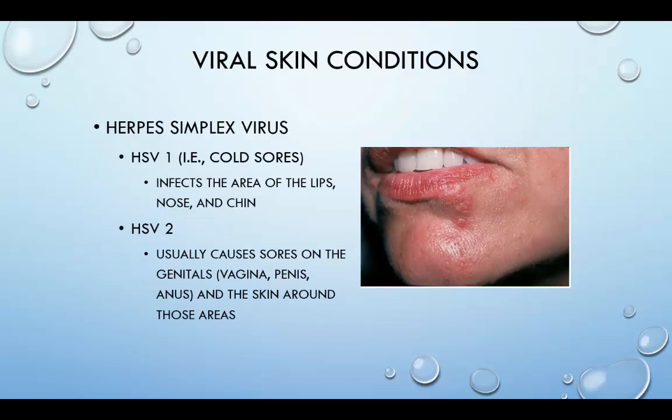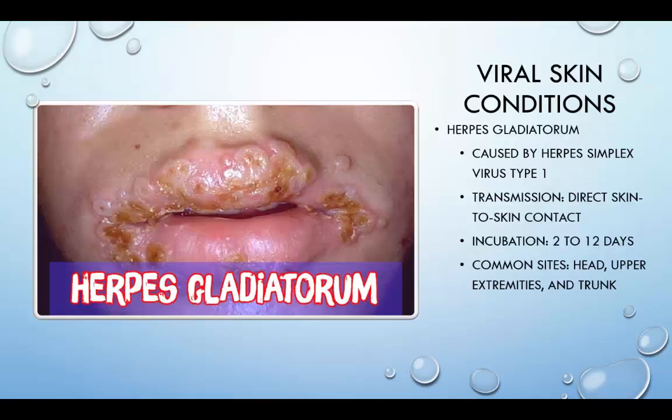Viral skin infections are typically extremely contagious. Herpes simplex virus has virus 1 and virus 2. HSV-1 is also known as cold sores and infects the areas of the lips, nose, and chin. HSV-2 usually causes sores on the genitals such as the vagina, penis, and anus, and the skin around those areas. HSV-1 causes about one-third of new cases of genital herpes and is transmitted most often through oral sex. HSV-2 causes two-thirds of all new genital herpes cases and 95% of all recurrences of genital herpes, and is the most commonly sexually transmitted disease in the United States. Herpes gladiatorum is an infection that may cause no other symptoms or may involve a fever, localized lymphadenopathy, malaise, myalgia, pharyngitis, or rarely keratoconjunctivitis.